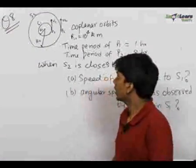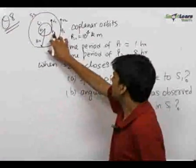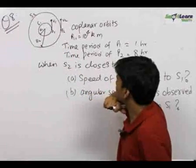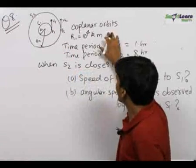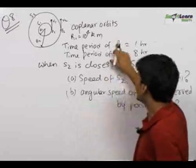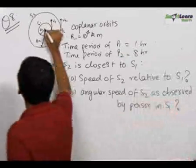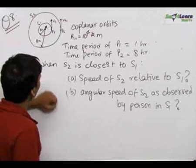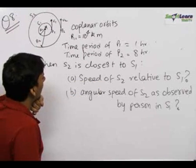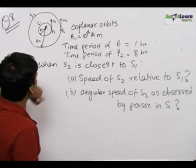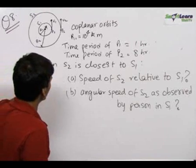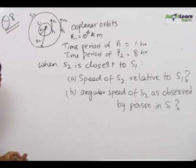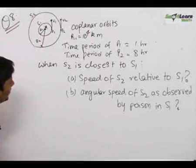In this question, we have two satellites P1 and P2 which are moving in coplanar orbits of radius R1 and R2 respectively. We have been given the value of R1 and the time period of both satellites. They are both revolving around a common planet of mass M. We need to find the speed of S2 relative to S1 when both are closest to each other, and also the angular speed of S2 as observed by a person in S1 at the same instant. They are both revolving in the same direction.